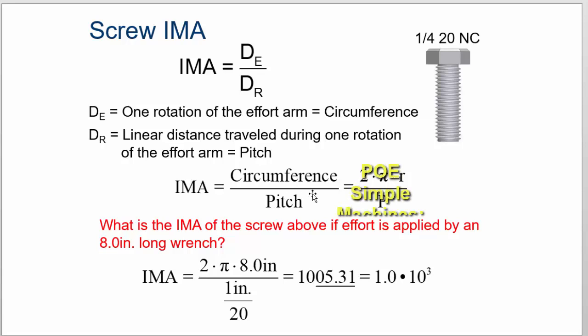And to get that, all we have to say is 2πr divided by p. So that's how we calculate the IMA for a screw.